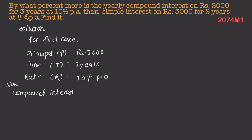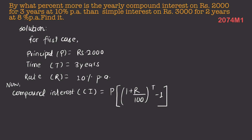Compound interest CI is equal to P times (1 + R/100) to the power T, minus 1. That is: 2000 times (1 + 10/100) to the power 3, minus 1.